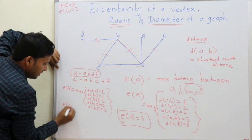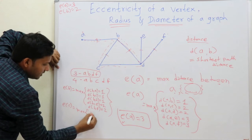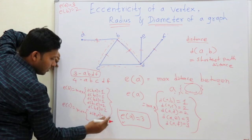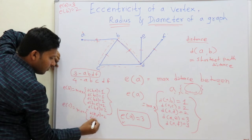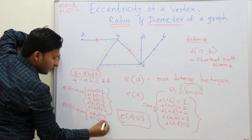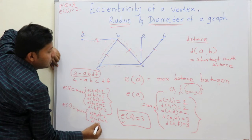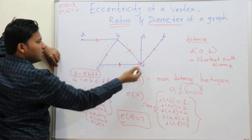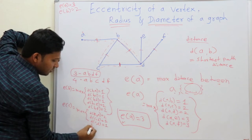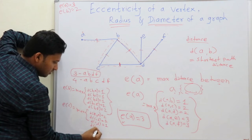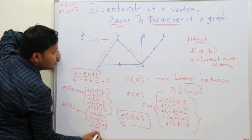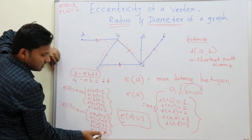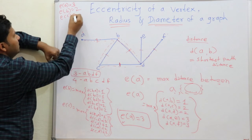Now the eccentricity of C. Distance C to A is 2, C to B is 1, C to D is 1 — taking the shortest path. Distance C to E is 2 and C to F is 2. The maximum of these is 2, so the eccentricity of C is also 2.